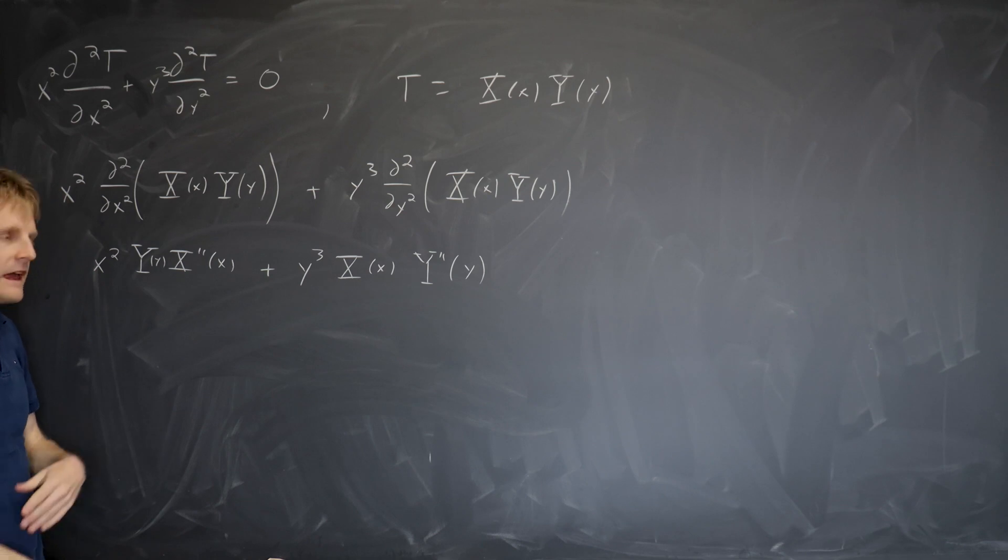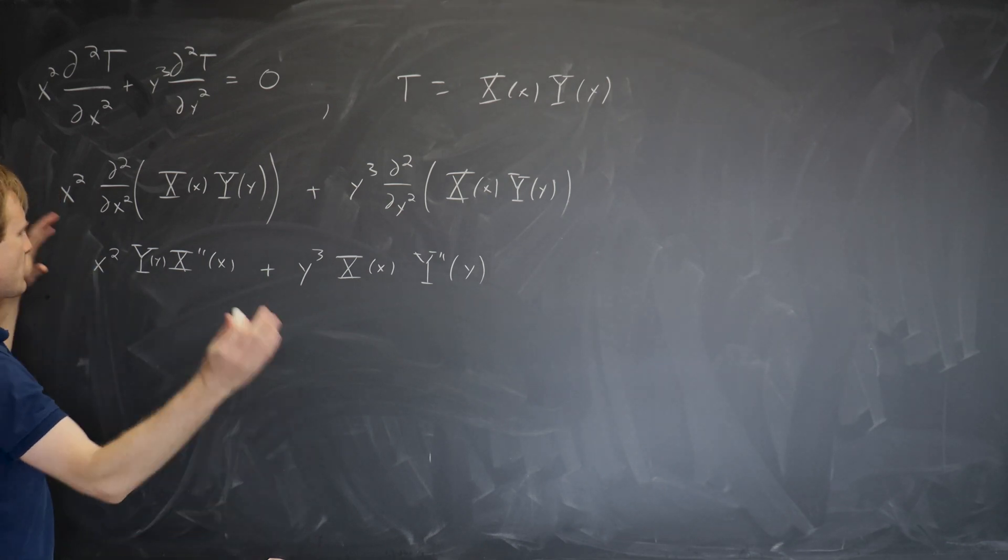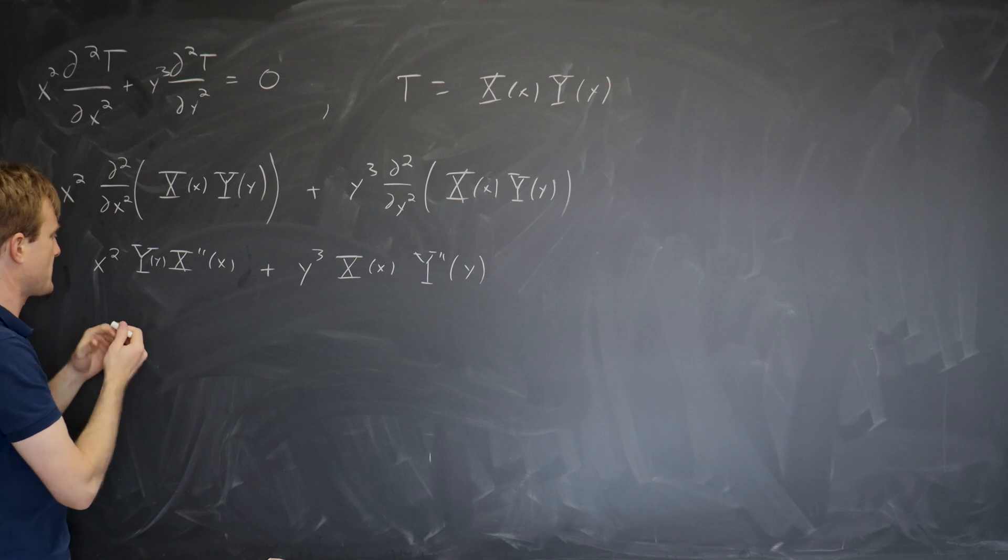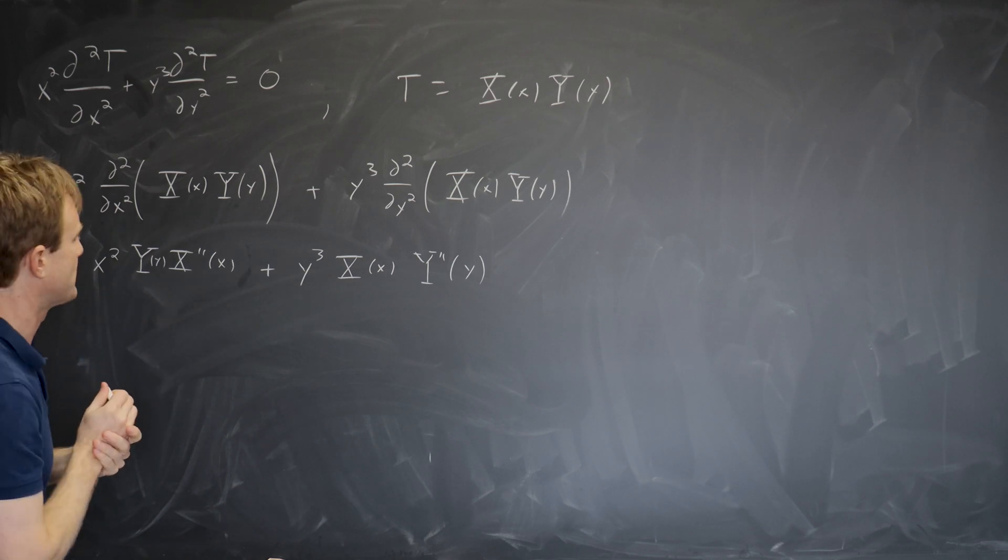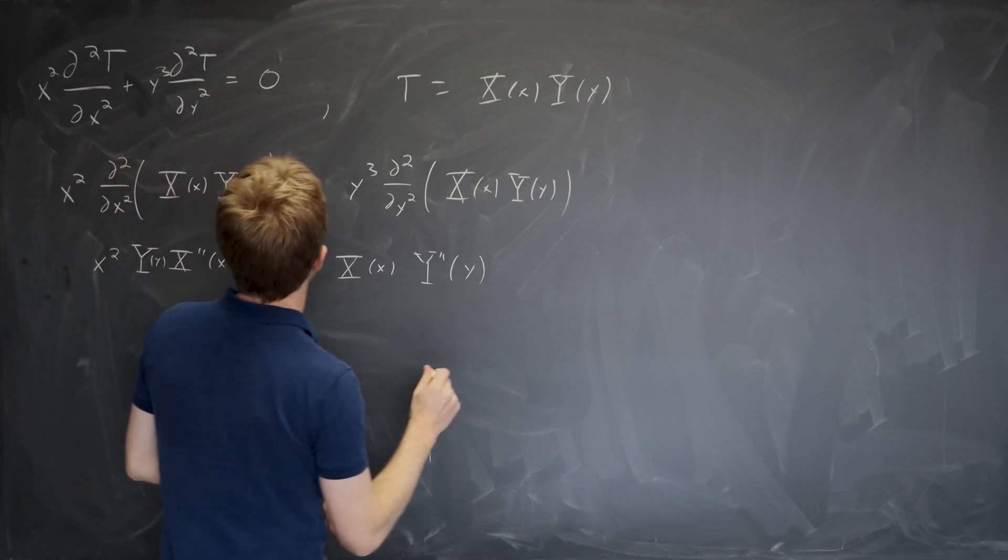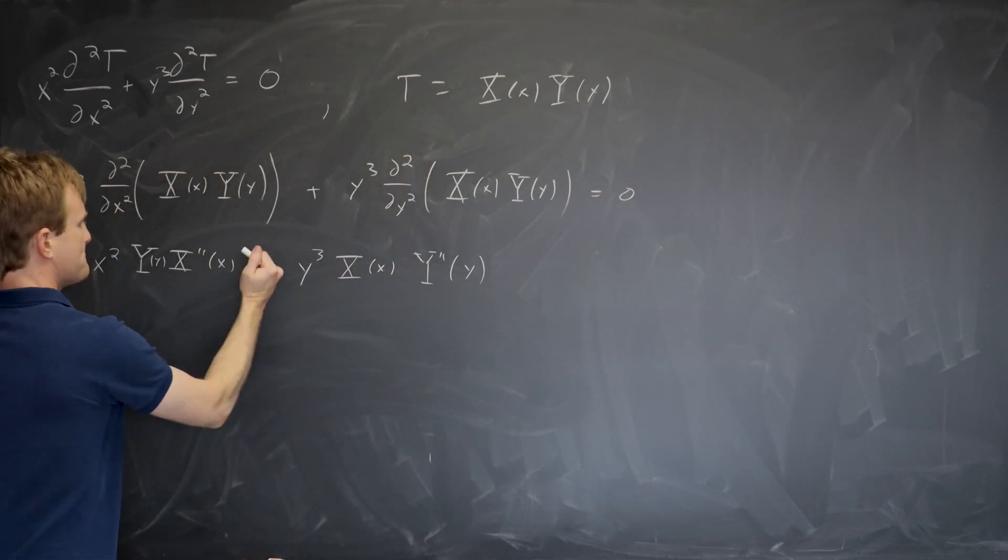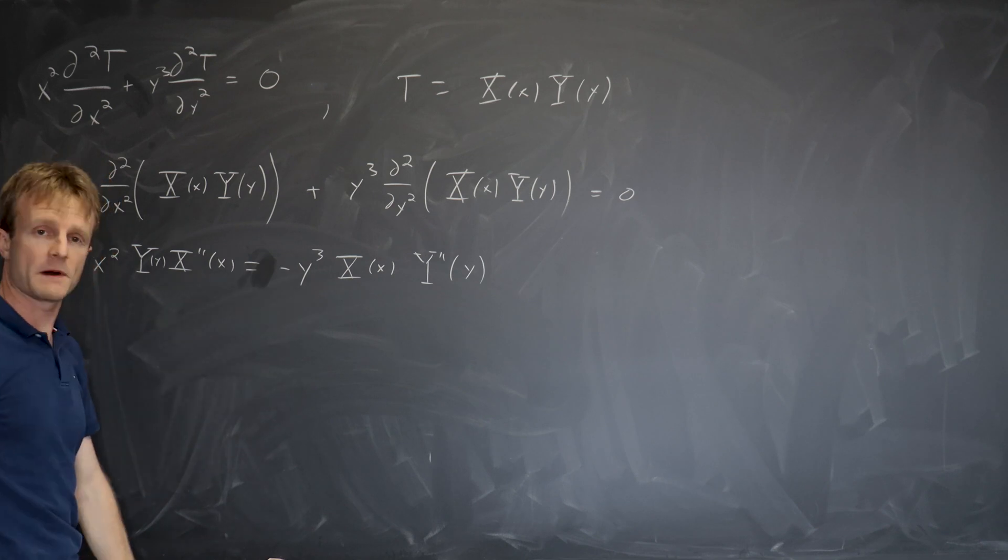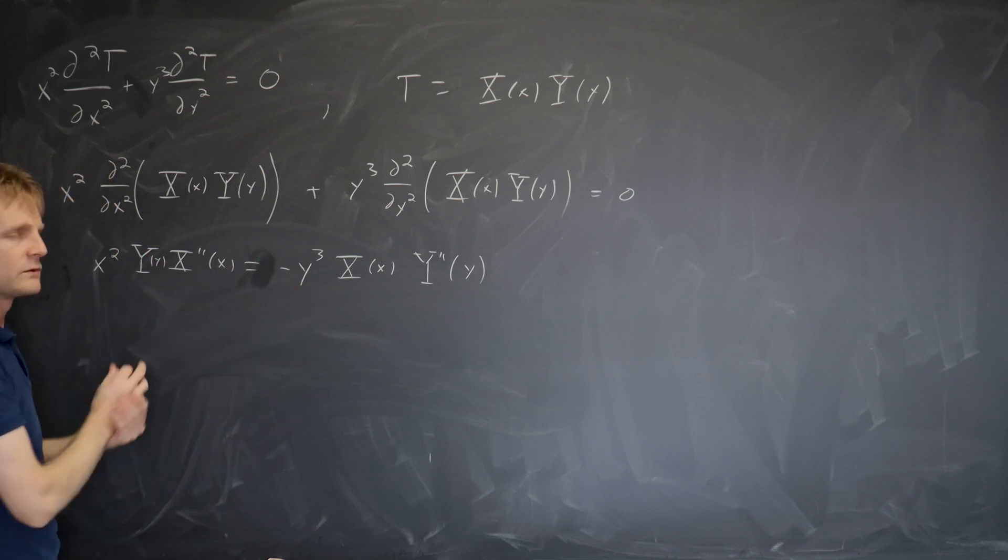In separation of variables, our goal is always to get one side of the equation just depending on x and another side just depending on y. Let's start by making it an equation. That should have said equals zero. And I'll change this to equals with a minus sign. So now I've got two sides.